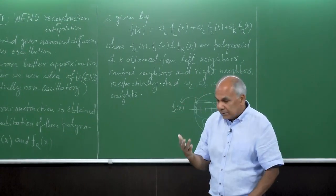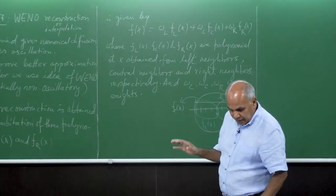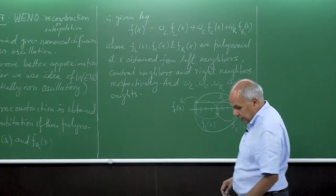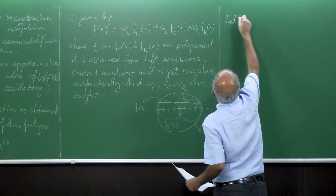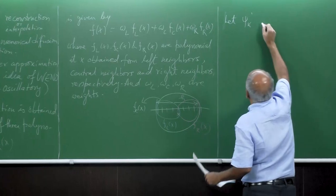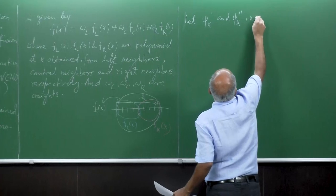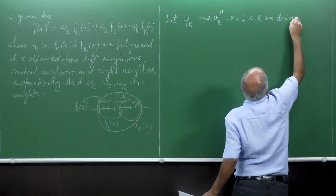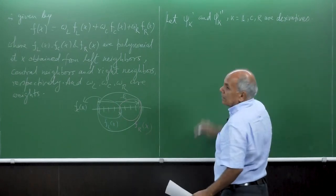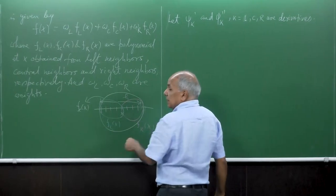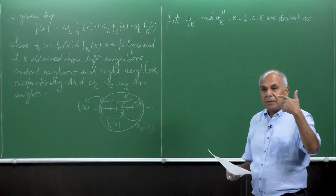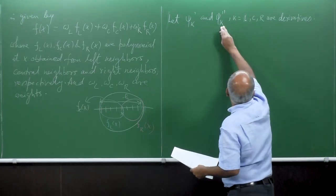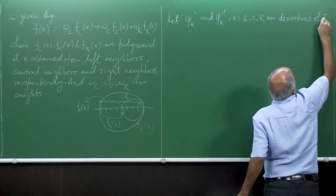So we have to interpolate three polynomials — on left, right, and center — and then compute the weight. The weight is a function of the derivative. Let psi_k prime and psi_k double prime, for k equal to left, c, r, be the first-order and second-order derivatives on the left, right, and center. We want a second-order approximation, so we use derivatives of order 2.